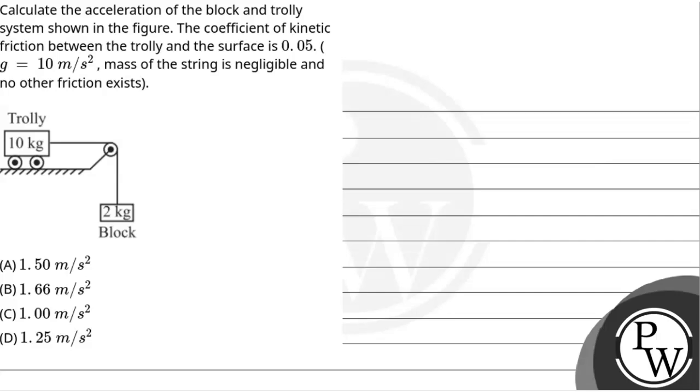Hello everyone, let's read the question. The question says calculate the acceleration of the block and trolley system as shown in the figure. The coefficient of kinetic friction between the trolley and the surface is 0.05. Given g equals 10 meter per second square, mass of the string is negligible and no other friction exists.